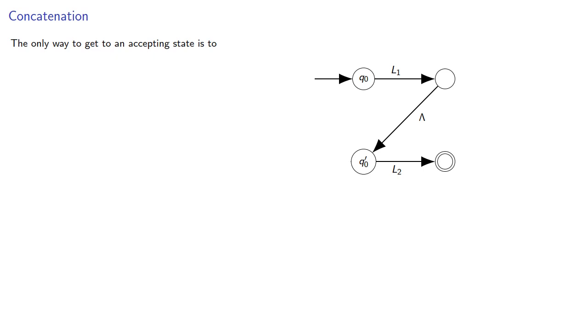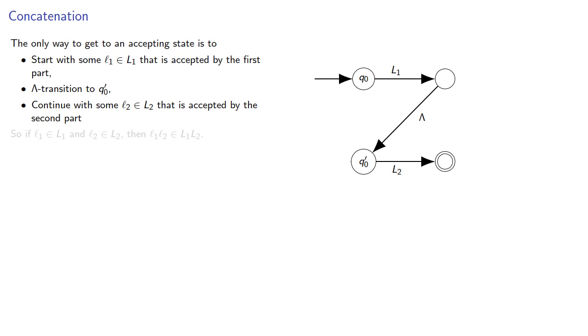Now note, the only way to get to an accepting state is to start with some string in L1 that's accepted by the first part, perform a lambda transition to Q0 prime, and then continue with some string in L2 that's accepted by the second part. So if we have a string in each language, their concatenation is going to be in the concatenated language and the string will be accepted by our NFA lambda.